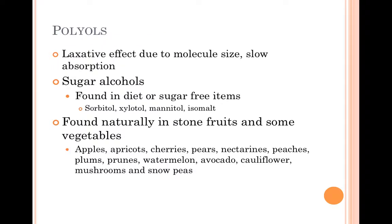The last FODMAP group is polyols. These molecules are too large for simple diffusion in the gut, resulting in slow absorption and a laxative effect. Sugar alcohols are considered polyols. They are commonly found in sugar-free and diet items, and they typically end in the suffix "-ol": sorbitol, xylitol, mannitol, and isomalt. Polyols are also found naturally in stone fruits and some vegetables.